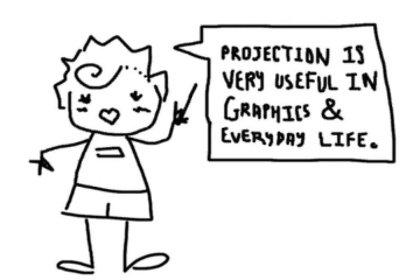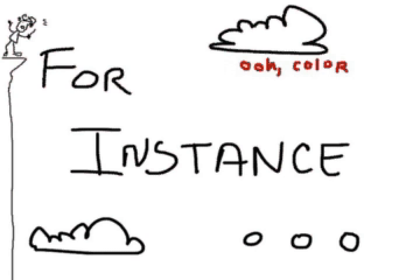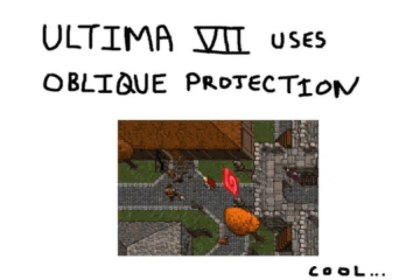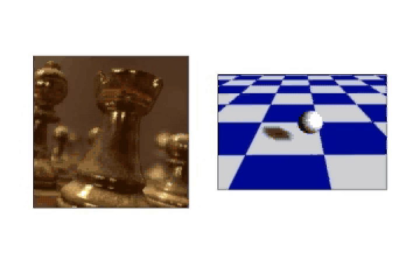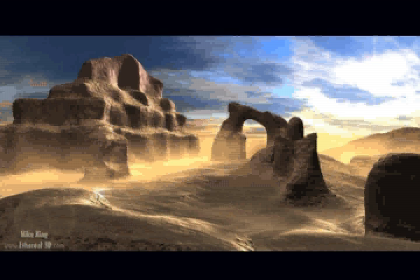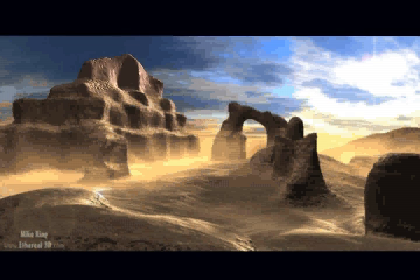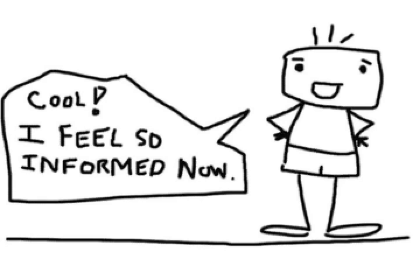Projection is very useful in graphics in everyday life. For instance, Ultima 7 uses oblique projection. Cool! Generally speaking, projection is a type of transformation that is often used to project 3D points on a 2D plane. We could use perspective projection to simulate the depth of objects and scenes.